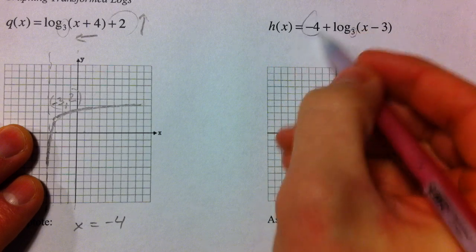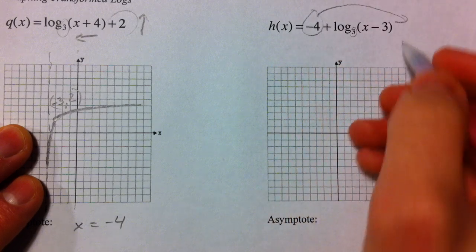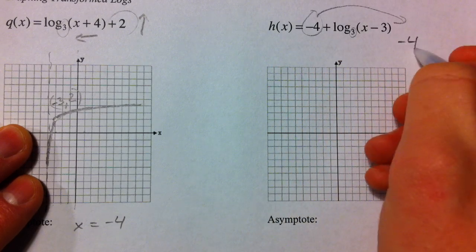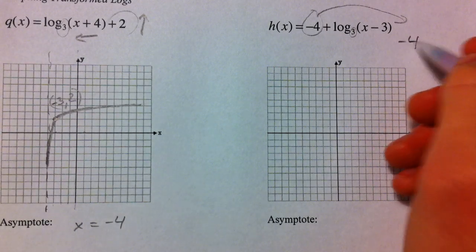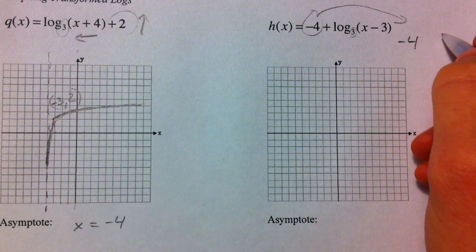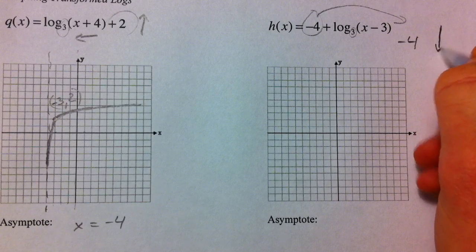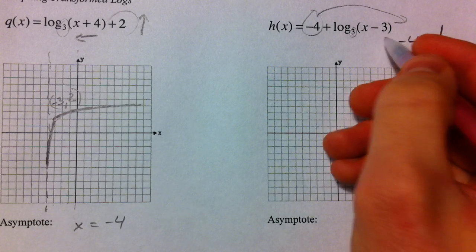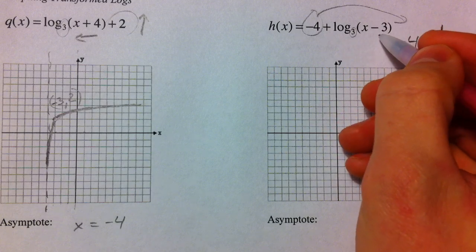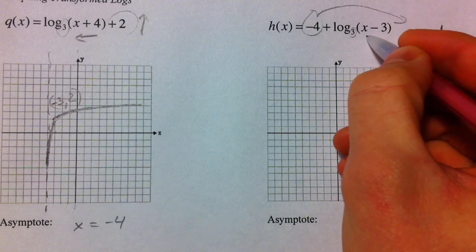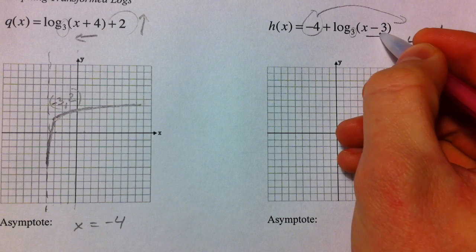Alright, this negative 4, it could be just as much on the end, and it doesn't matter if you put it at the beginning or the end. What matters is that you realize it's a minus 4. It's not affecting the x, so it's got to be affecting the y, so it shifts down 4. This minus 3 is with the x, so it's opposite of how we think about it. And so it actually shifts it to the right 3.